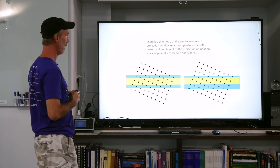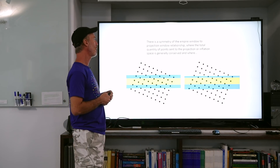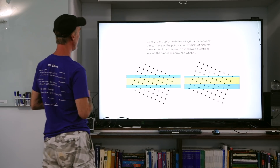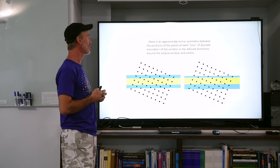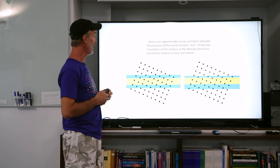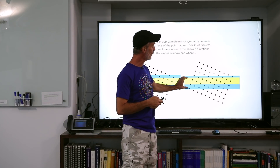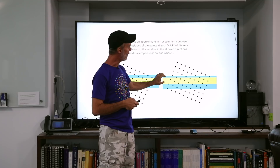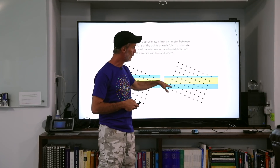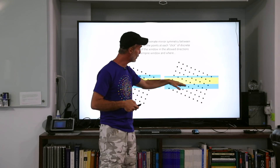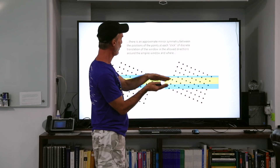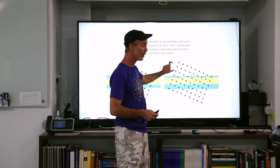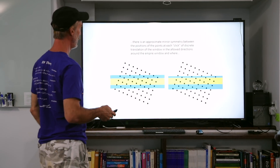This principle defines the twelve legal on-off selections of points on this finite possibility space of the Penrose tiling — the empire window to cut window concept. There is a symmetry of the empire window to the projection window relationship, where the total quantity of points sent to the projection or inflation space is generally conserved, and where there is an approximate mirror symmetry between the positions of the points at each click of discrete translation of this window in the allowed directions around the empire. In other words, if you click up or down, approximately an equal number of points enters and exits the window, so it's conserved.